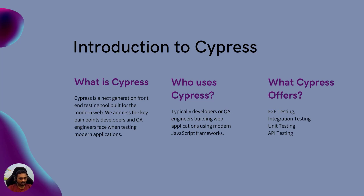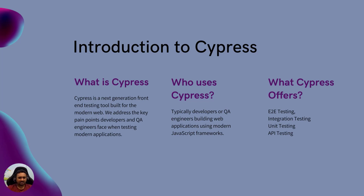Cypress addresses the key pain points that developers and QA engineers face when testing modern web applications. For example, applications may not have unique identifiers, elements may not be quite unique, or some elements get rendered at runtime where only part of the DOM gets refreshed. These kinds of issues can cause problems when automating with traditional tools like Selenium, WebDriver, or other automation tools. Cypress tries to overcome these challenges.